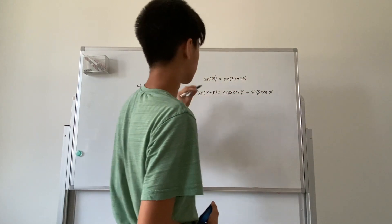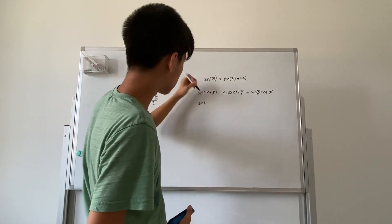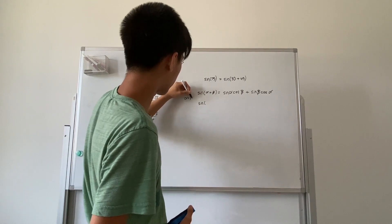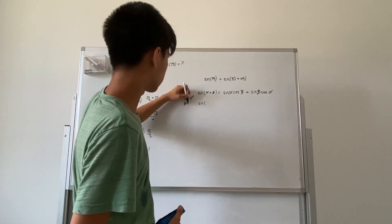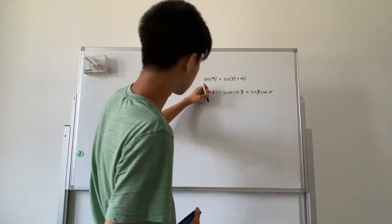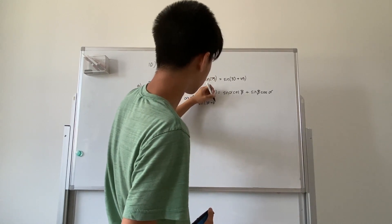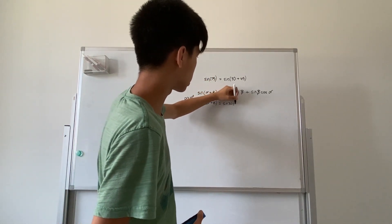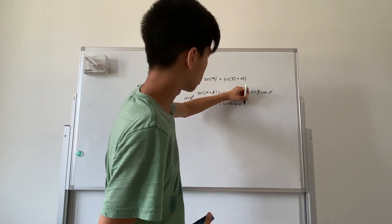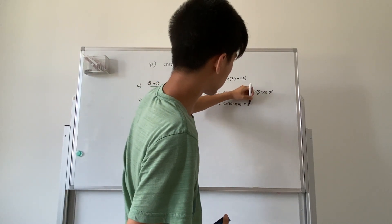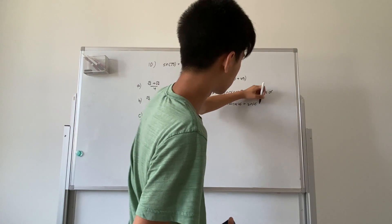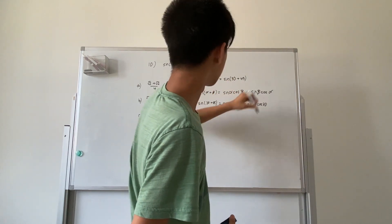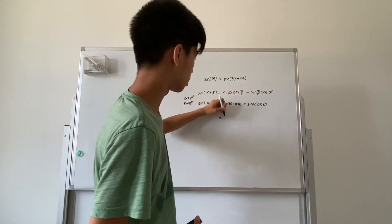If you plug in 30 for alpha and 45 for beta, we get sine of 30 plus 45 equals sine of 30 times cosine of 45 plus sine of 45 times cosine of 30. So if you add that up we get one half.